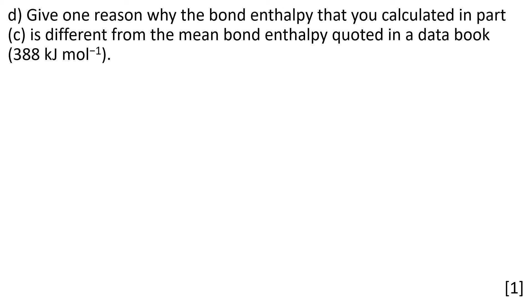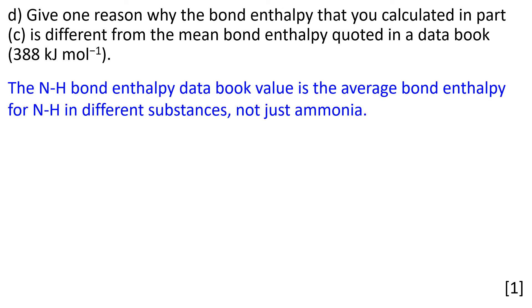The reason why our value is different is because the data book value is an average value for N-H bonds taken across a range of different compounds, whereas here we've only worked out what it is in ammonia, so it could be different. The N-H bond data book value is the average bond enthalpy for N-H in different substances, not just ammonia.